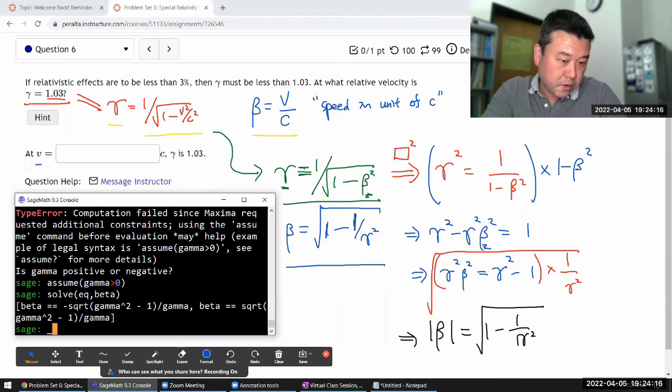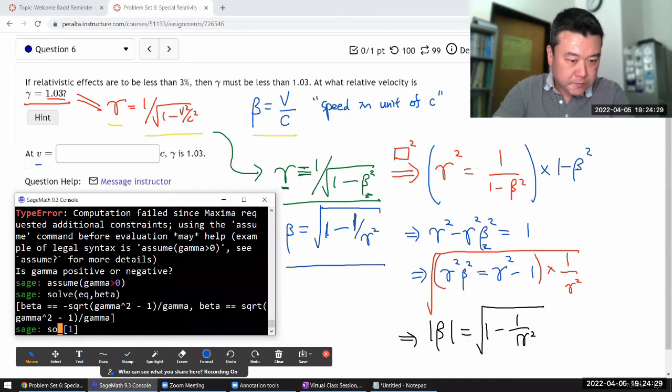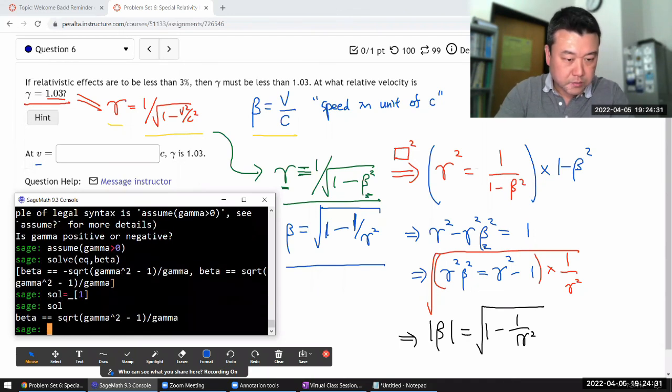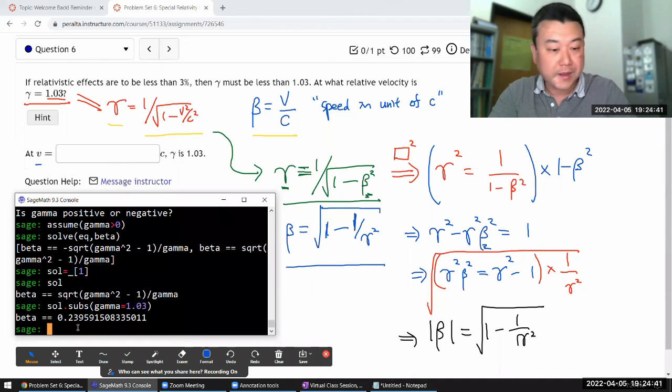And this system can actually also plug in the numbers for you. The underscore is the expression for the previous output, which is this. Let me get this item here. So, I get the equation that says beta. Let me say this is my solution. So, that's my solution. And I can substitute in gamma. Solution substitute in gamma is equal to 1.03. And there it is.